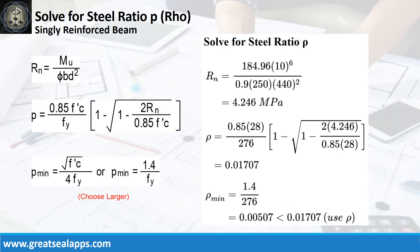Given maximum moment of 184.96 kN·m, resistance factor of 0.9, b equals 250 mm, and d equals 440 mm, the beam design ratio RN equals 4.246 MPa, and the reinforcement ratio ρ equals 0.01707.